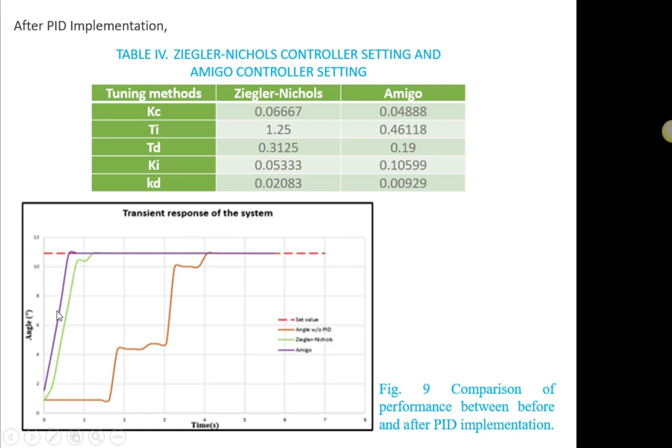Amigo tuning methods give better results than the Ziegler-Nichols tuning method. It can be seen clearly that the Amigo tuning method has a smaller rise time than Ziegler-Nichols, which is 4.591 seconds. Without PID implementation, the time taken for the angle of the tyre to reach the set value is longer,